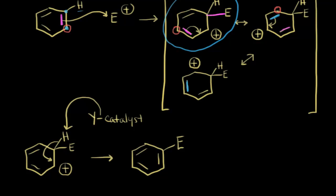Following the electrons: the magenta electrons move in to reform the aromatic ring. Deprotonation of the sigma complex restores the aromatic ring, giving a stable product. The other product is Y bonded to that proton. Taking those electrons away from the catalyst regenerates the catalyst, so it's free to catalyze another reaction. This is the general mechanism for electrophilic aromatic substitution, which the specific reactions we'll see will follow.